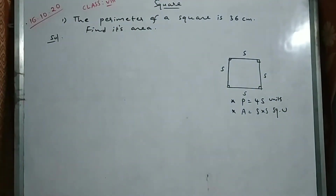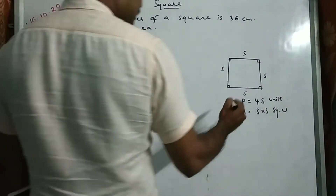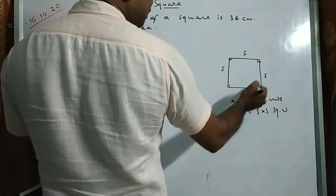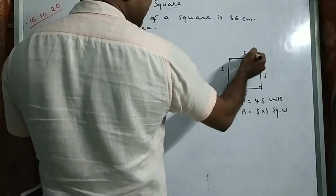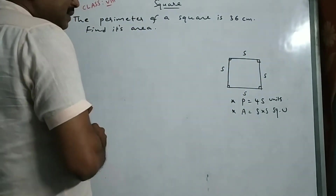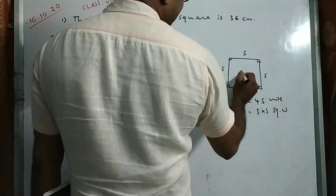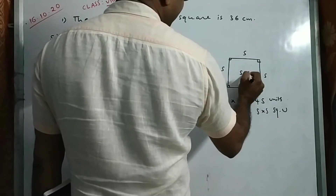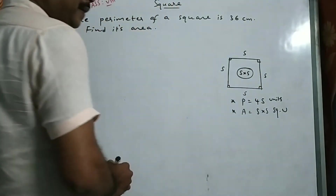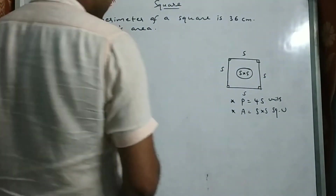Perimeter of square is 4S — 4 into side — because we have 4 sides. And area is side into side. Area represents the space occupied by the diagram.